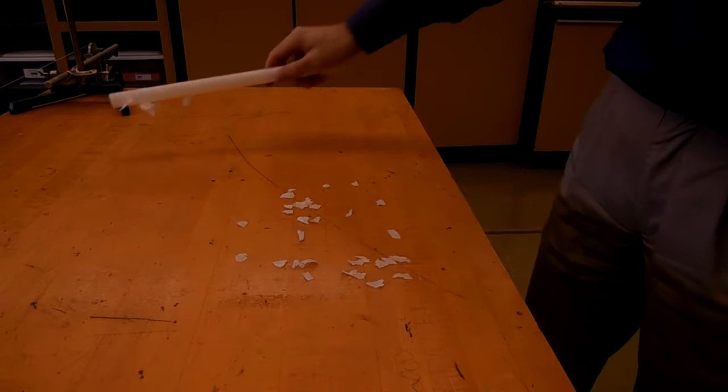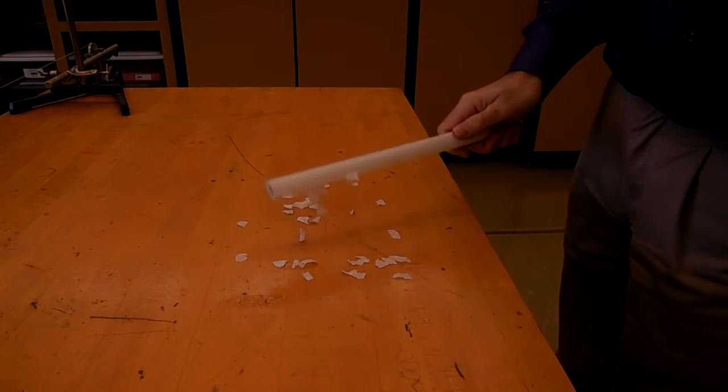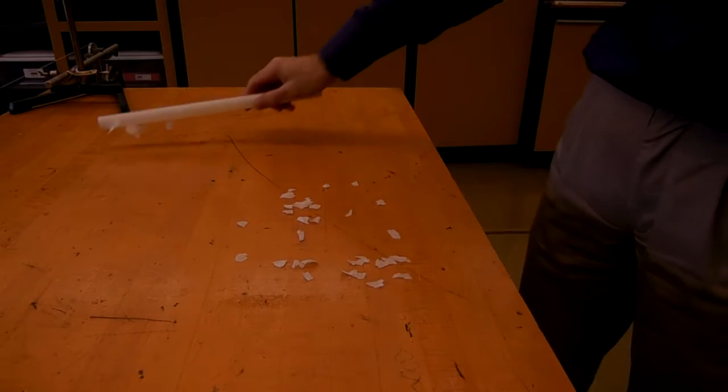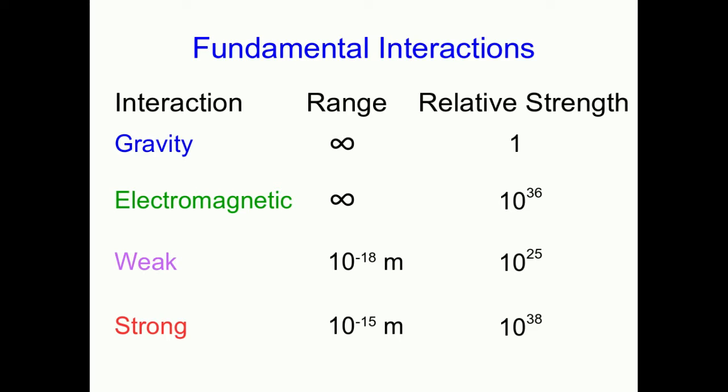But just look at this rod, which has been charged, and with its static electric interaction, it's picking up these little pieces of paper. Well, it's having a tug of war with the whole Earth, and the tiny little charged rod is winning that tug of war because the electromagnetic interaction is so much stronger than gravity is. Just about every interaction we're concerned with when we're building bridges, building engines, doing chemistry, are in fact various manifestations of the electromagnetic interaction.